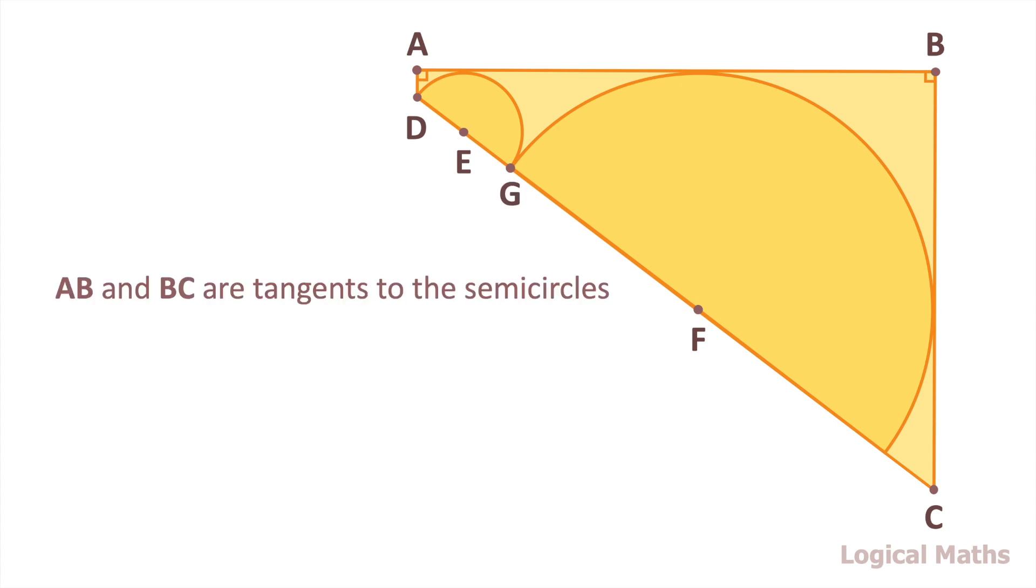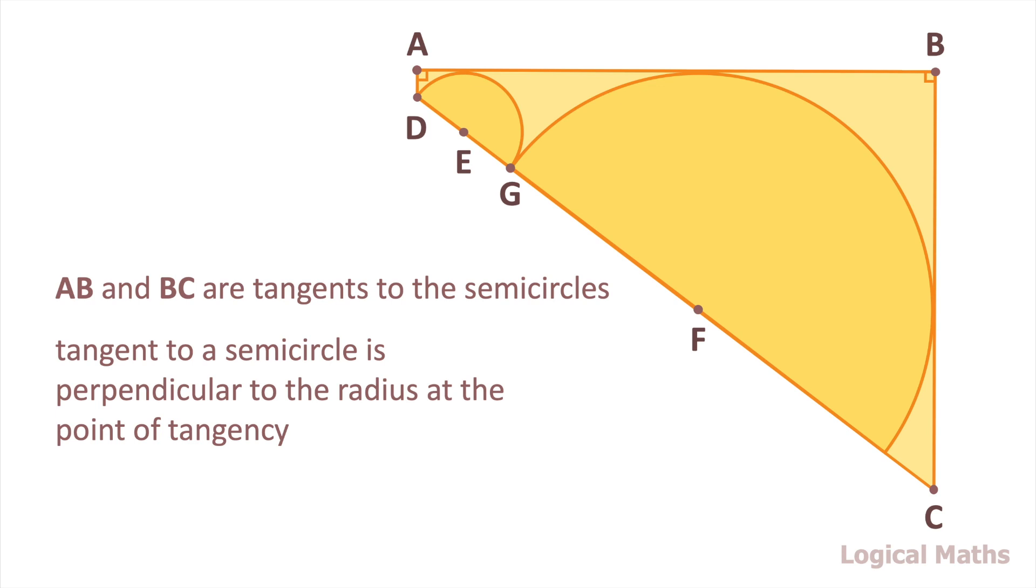AB and BC are tangents to the semicircles. It means that at the point of tangency AB and BC are perpendicular to the radius of the semicircles. We have three points of tangency. Mark them as H, I and J.